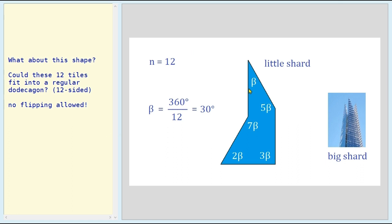Now what about this shape? This one doesn't have any symmetry, but there's no flipping allowed — you're not allowed to turn it over. For n equals 12, beta is 30 degrees. So all these angles are multiples of 30 degrees. So could 12 of these tiles fit into a regular dodecagon, a 12-sided polygon?